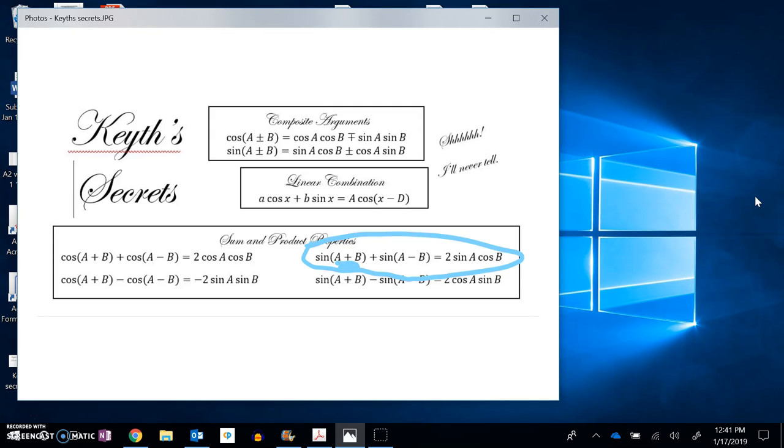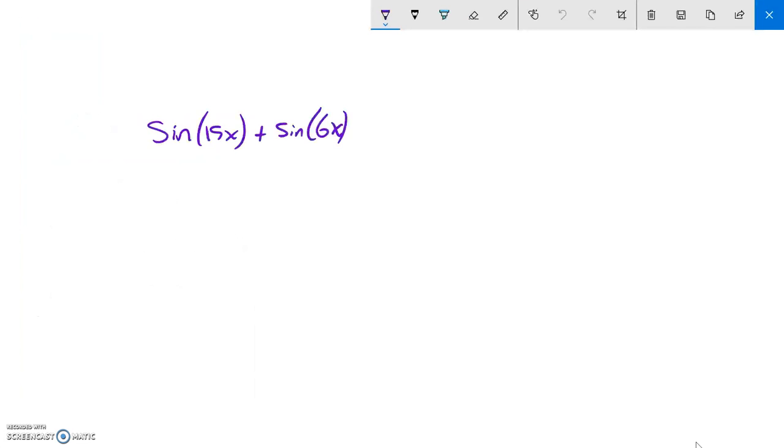And my A and B are hidden, they're not given to me explicitly. I have to figure out what they are. So A plus B and A minus B, so 2 sine cosine is what I'm going to end up with. I'm going to end up with something that's 2 times sine times cosine.